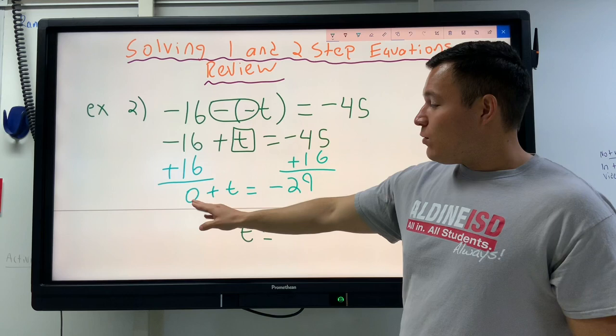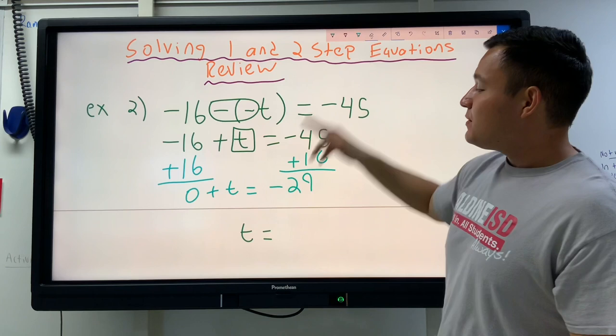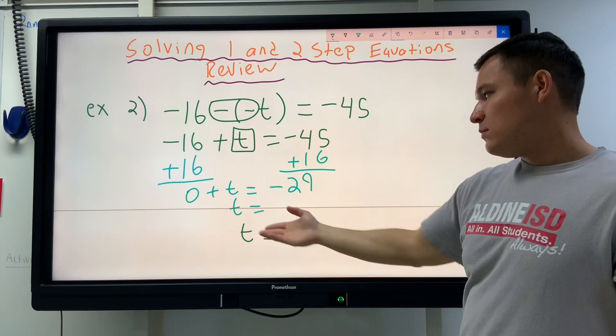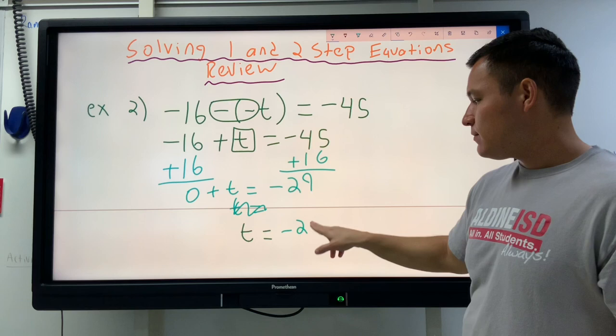Then all we have to do is, since this is just 0 plus T, it doesn't even matter. So you could rewrite this. T equals, and I already have that part, so T equals negative 29. And we're done.